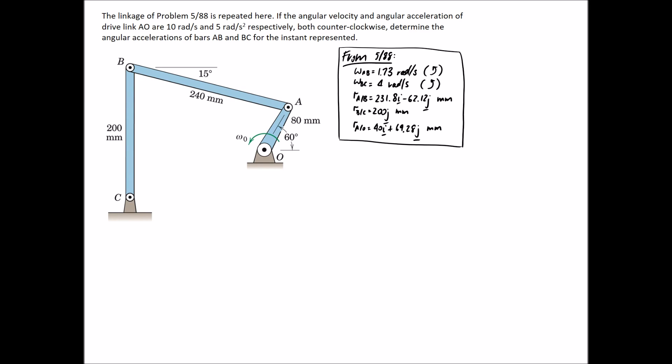The linkage problem of 5/88 is repeated here. If the angular velocity and angular acceleration of drive link AO are 10 radians per second and 5 radians per second squared respectively, counterclockwise, determine the angular accelerations of bars AB and BC for the instant represented.